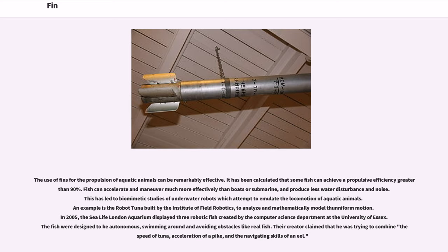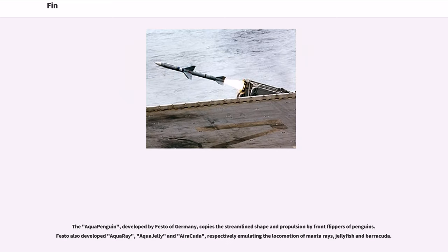Their creator claimed he was trying to combine the speed of tuna, acceleration of a pike, and the navigating skills of the eel. The AquaPenguin, developed by Festo of Germany, copies the streamlined shape and propulsion by front flippers of penguins. Festo also developed AquaRay, AquaJelly, and Bionic Costasiella, respectively emulating the locomotion of manta rays, jellyfish, and barracuda.